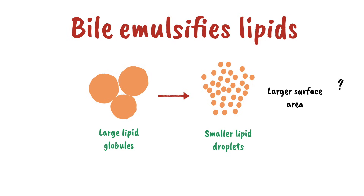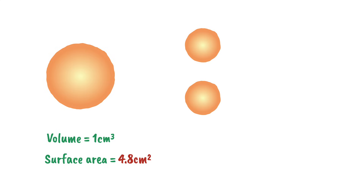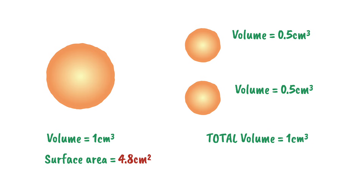Picture a single large globule of lipid with a volume of 1 centimeter cubed. The total area of its surface would be about 4.8 centimeters squared. Now imagine we split that volume in half, so we have two spheres, each with a volume of 0.5 centimeters cubed, but still totalling 1 centimeter cubed.